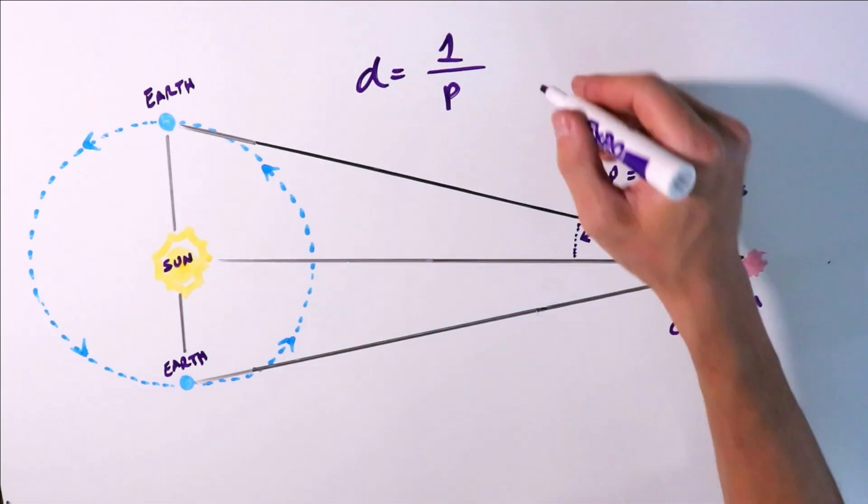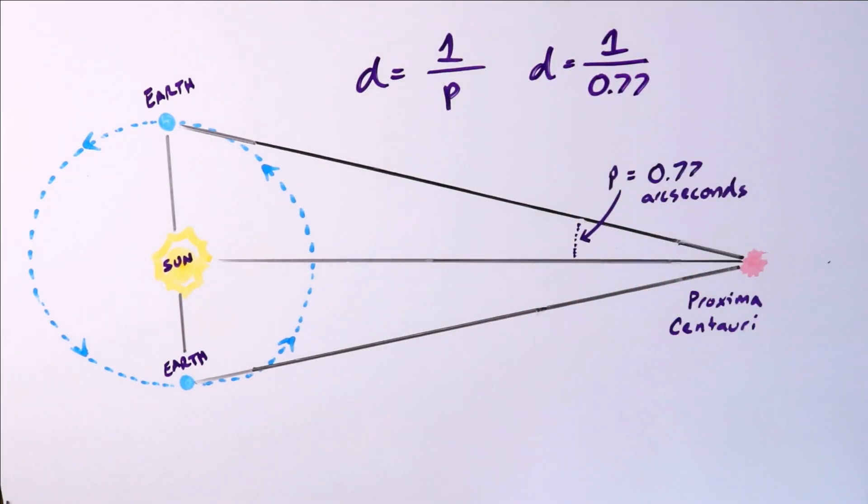Using the parallax formula, we find that 1 divided by 0.77 equals 1.3. So Proxima Centauri is 1.3 parsecs from Earth. And that's really all you have to do. If you want to convert parsecs into light-years, this is also easy.